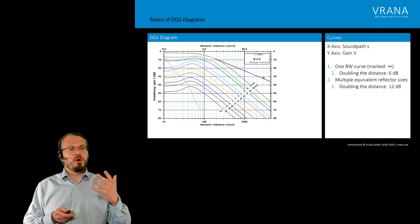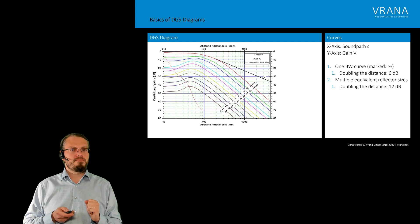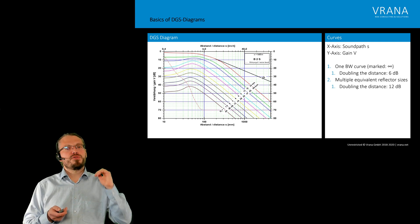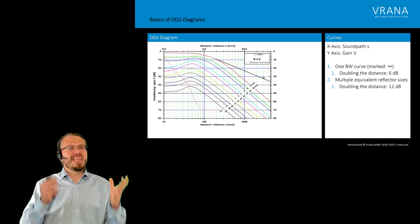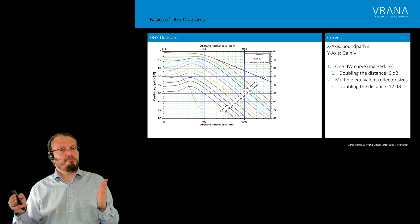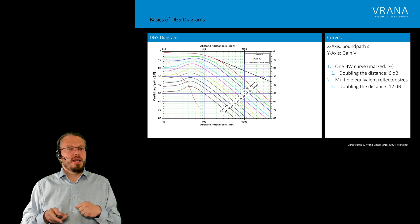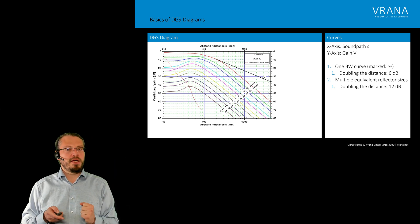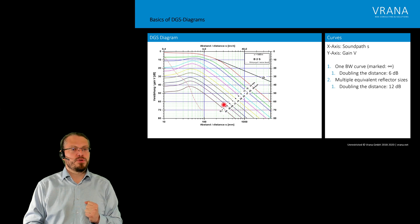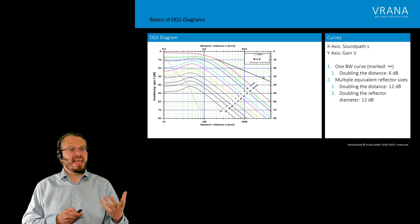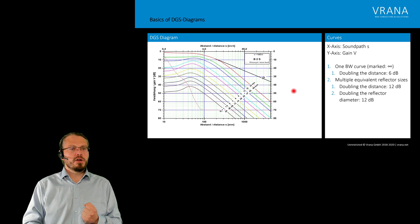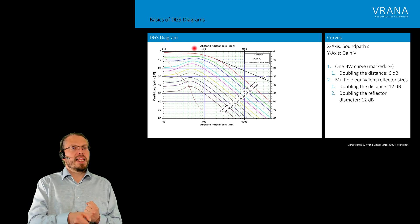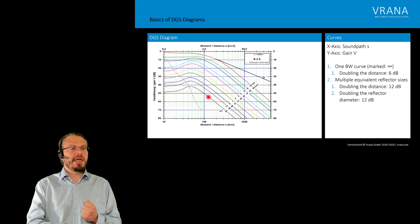We can already see that the slope of the other curves is steeper — here, if we double the distance we have a difference of 12 dB. Those curves represent different equivalent reflector sizes, or different flat bottom hole sizes, for different sound paths. We already talked about doubling the distance adding 12 dB, and going from the 1 mm curve to the 2 mm curve — doubling the reflector diameter — we also see a 12 dB difference. We can also see a peak here marking the end of our near field; beyond that we're in the far field.